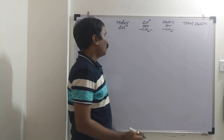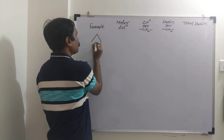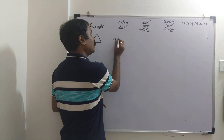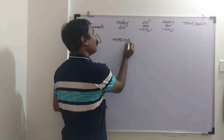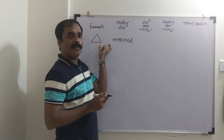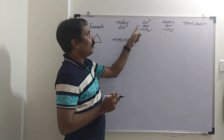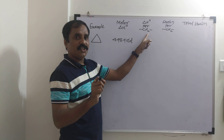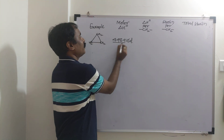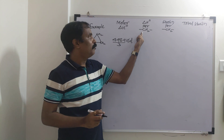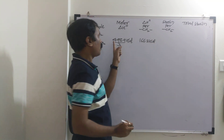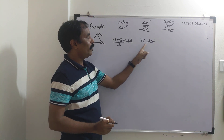For cyclopropane, the combustion of one mole releases 498.9 kilocalories. The number of CH₂ units in cyclopropane is 3, so enthalpy of combustion per CH₂ is 498.9 divided by 3, which is 166.3 kilocalories.